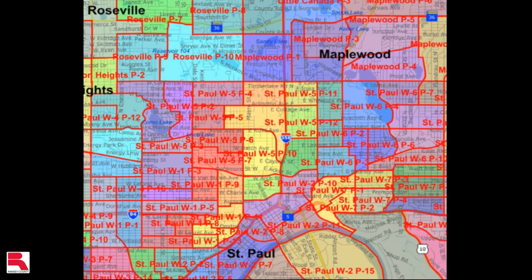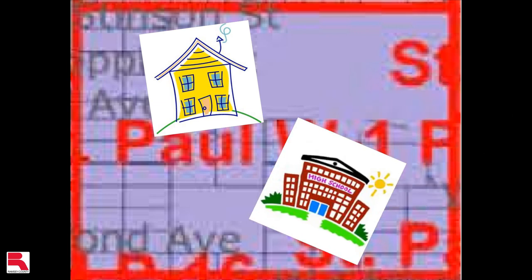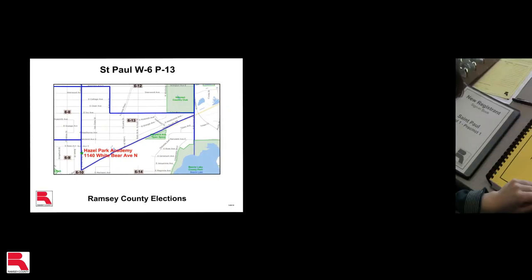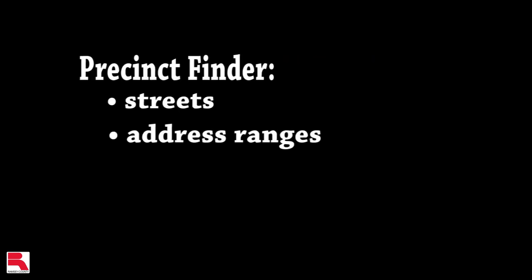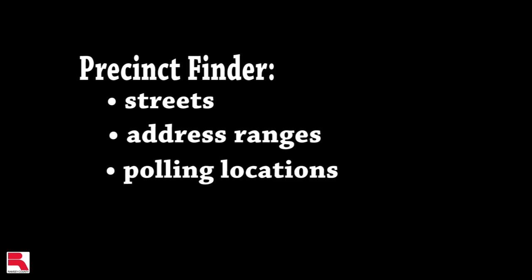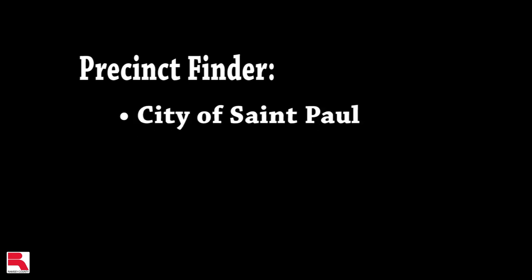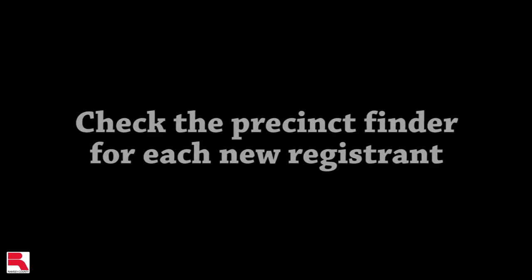For voting purposes, municipalities are divided into one or more precincts. Each residential address is located within a specific precinct and the voter must go to a specific polling location to vote. This ensures that voters vote for offices specific to their jurisdiction. A map and a precinct finder are provided with your supplies. The precinct finder lists all the streets and address ranges in the municipality and the corresponding polling locations. Precinct finders are available for the City of St. Paul and for Ramsey County. It is important to check the precinct finder for each new registrant to ensure that every voter is voting in the correct polling place.